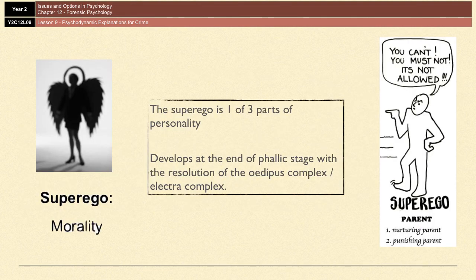The important bit for crime is the superego, because psychodynamic explanations for crime tend to focus on the superego as it is the part that's all about morality. The superego develops at the end of the phallic stage with the resolution of the Oedipus or Electra complex, around the age of five, and it focuses on morality. According to Freud, a person's sense of morality is always internalized from the same-sex parent — so a son will learn right from wrong from his father, whereas a daughter will learn those things from her mother.